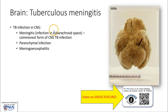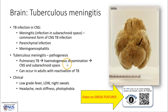TB can infect the CNS in several ways: as meningitis as seen here, where there is infection in the subarachnoid space; also there can be direct parenchymal infection, and a combination in TB meningoencephalitis. The pathogenesis is due to hematogenous dissemination, usually from pulmonary TB, where the organisms can reach the CNS as well as the subarachnoid space. This can also occur in adults who become immunocompromised and can get a reactivation of TB.